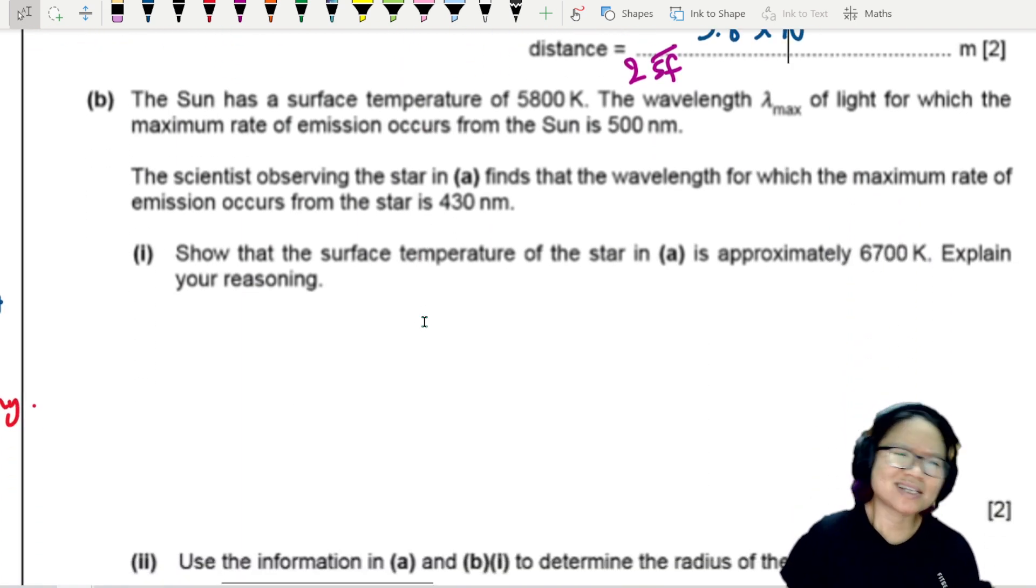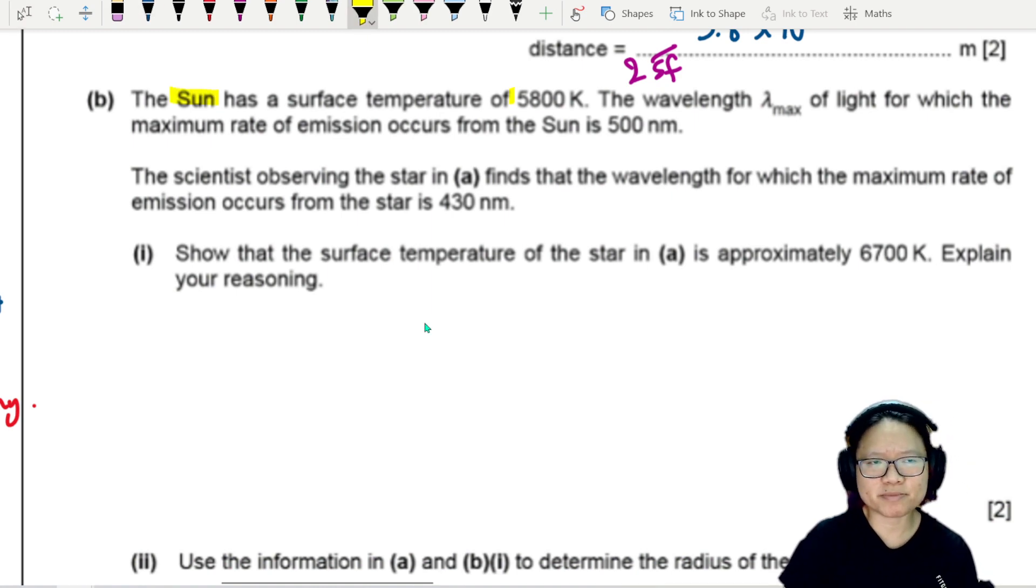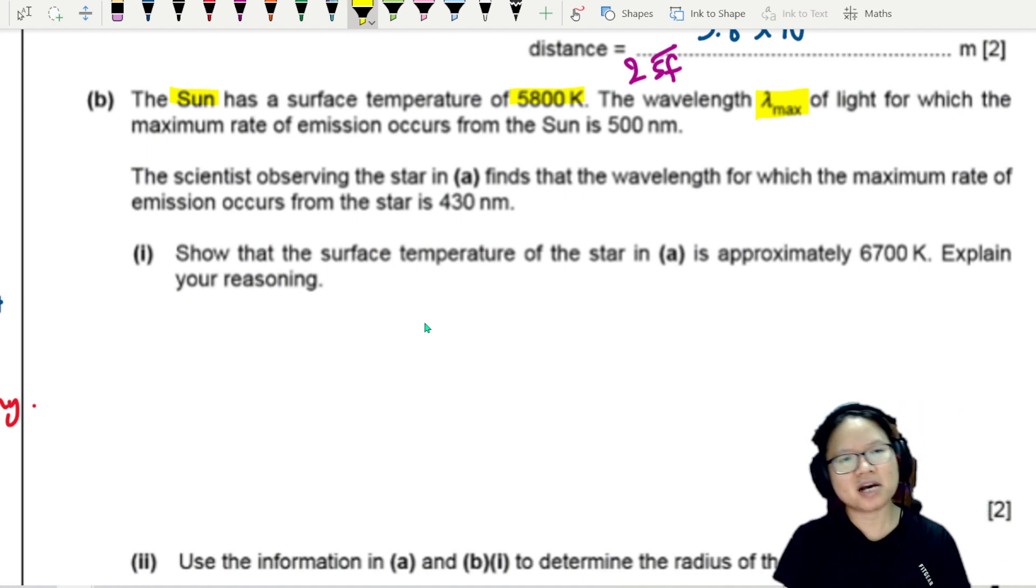Part B. The sun, our good old sun, has a surface temperature of 5800 Kelvin, and the λ_max of light for which the maximum rate of emission occurs from the sun is at 500 nanometers.